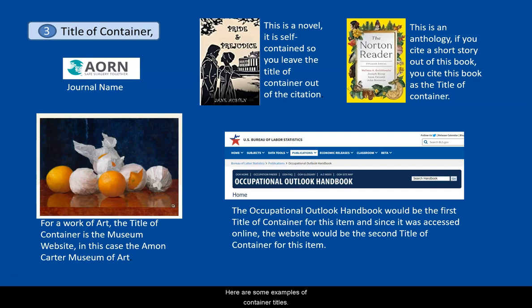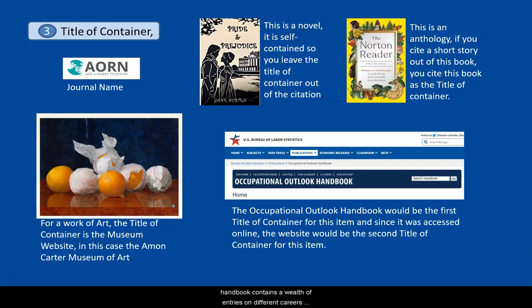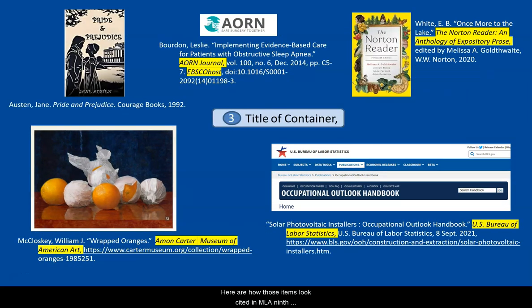Here are some examples of container titles. AORN is a nursing journal. The Amon Carter Museum is the home of a painting of wrapped oranges. The Norton Reader contains a number of short stories. Pride and Prejudice is a standalone novel and therefore has no container. The Occupational Outlook Handbook contains a wealth of entries on different careers — it is one container, and since we're viewing it on the website, the website is the second container. Here are how those items look cited in MLA 9th edition, with the title of container highlighted for your convenience.